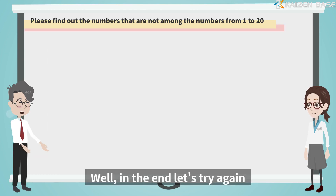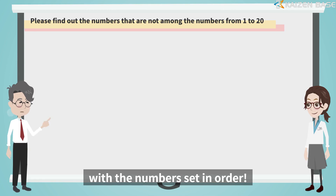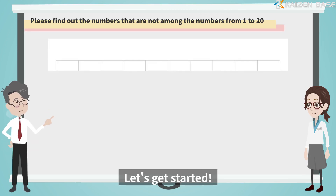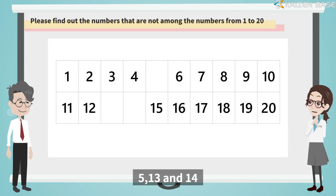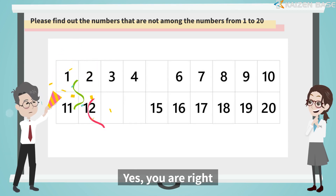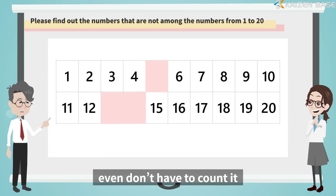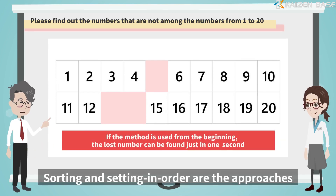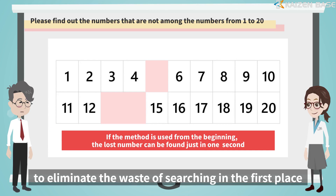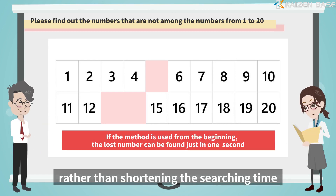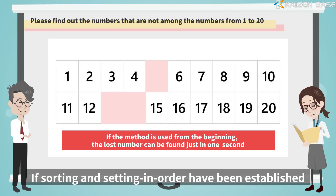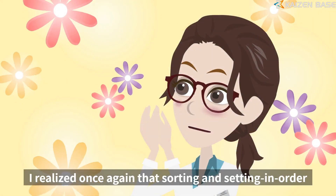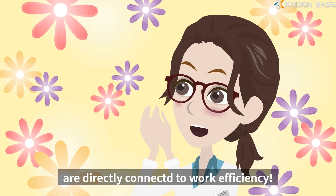In the end, let's try again with the numbers set in order. Let's check the effect of setting in order. How many seconds can it be shortened this time? I see — 5, 13 and 14. Yes, you are right. You can tell the missing numbers with a glance, you don't even have to count. This is the effect of sorting and setting in order. Sorting and setting in order are approaches to eliminate the waste of searching in the first place, rather than shortening the searching time. If sorting and setting in order have been established, you shouldn't have to search for things at all. After trying this game, I realized that sorting and setting in order are directly connected to work efficiency.